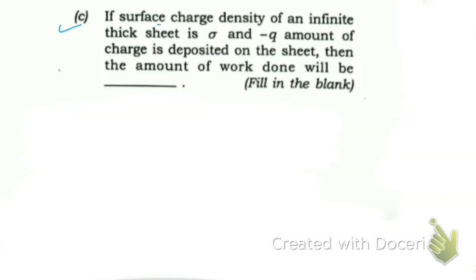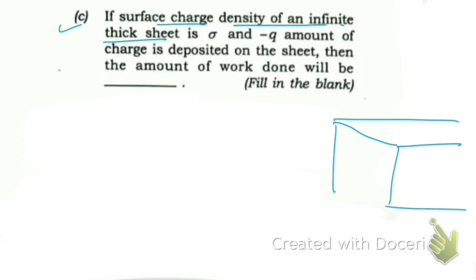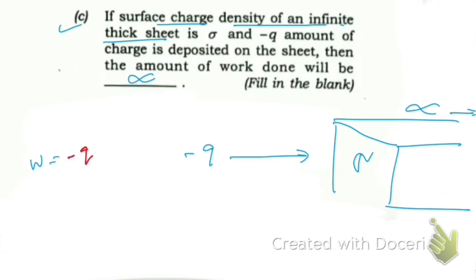Next question: if the surface charge density of an infinite thick sheet is sigma and a charge of −q is deposited onto the sheet, what amount of work will be done? The answer will be infinity. The work done is W = −q times the integral from infinity to r of the electric field dr.